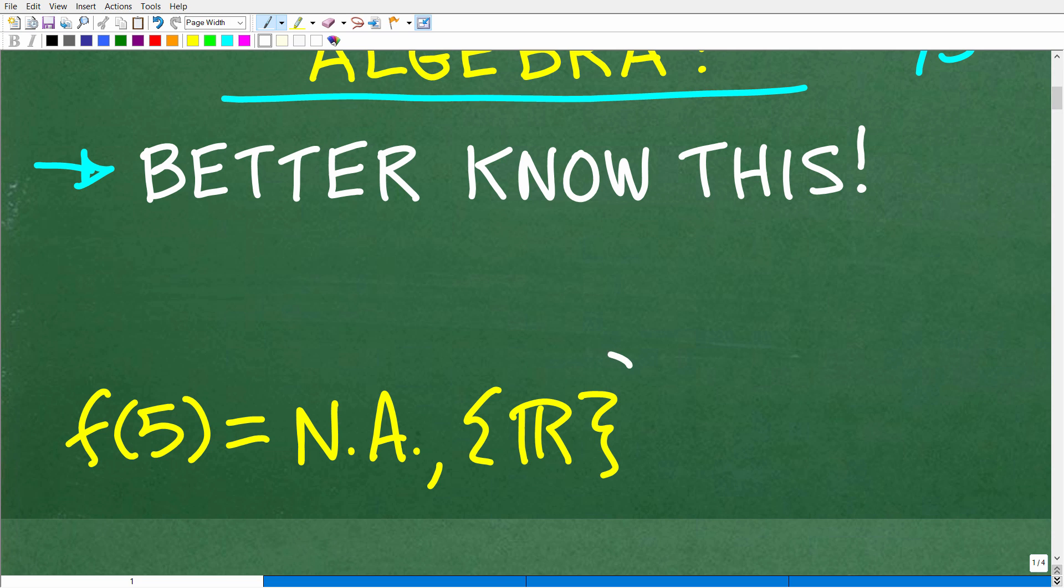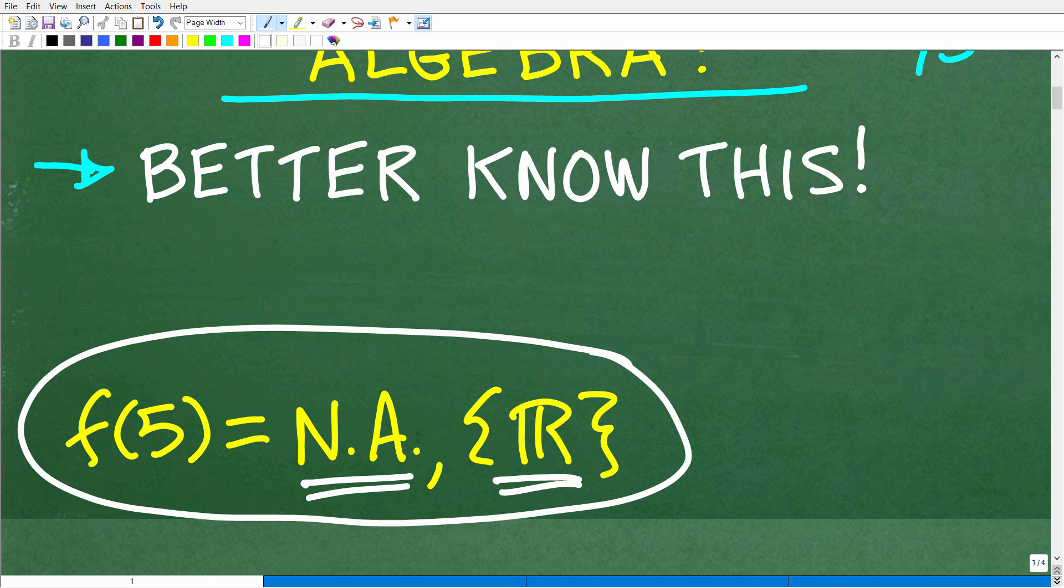The correct answer is the following. This is not allowed. Okay, this is in terms of this function being under the set of real numbers. This is a situation that's not allowed. So five specifically would not be in the domain of this function.